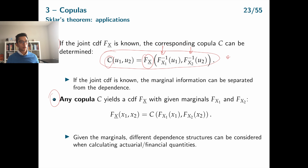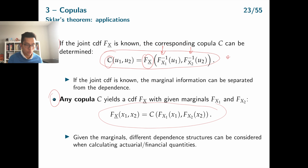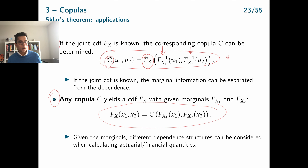The second application: assume you have already determined the marginals F_x1 and F_x2 from data, and now want to build a joint model. Sklar's theorem tells you that applying a copula C to the marginals gives back the joint CDF. If you don't know which copula to use, you can try different copulas on the same marginals — each copula gives a different joint CDF — and investigate the effect of different dependence structures on your probabilities of interest.